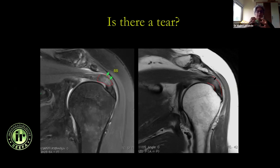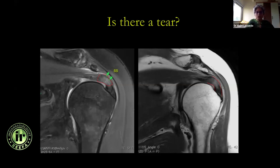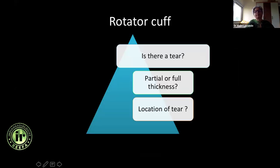This is important because when there is severe tendinosis, the internal fibers are not tightly packed together — hydrogen protons are moving and giving bright signal. Sometimes these can be as symptomatic as a full thickness tear because the tendon is not really functional, and the surgeon may decide what to do based on that. But it's not a tear right now because there is no fluid signal intensity. So this is severe tendinosis.